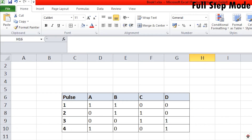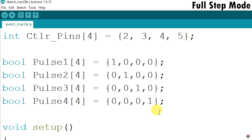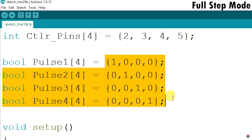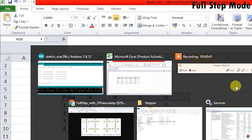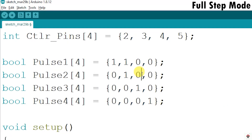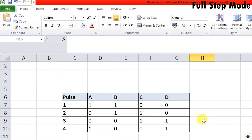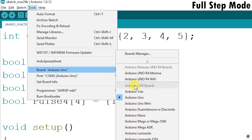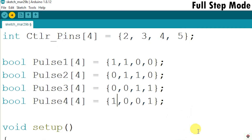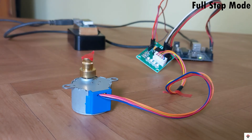Moving on to the full step mode, which is based on a different sequence table. One advantage of writing the code in array format is we only need to modify the pulse arrays. The new sequences are: pulse1 = {1,1,0,0}, pulse2 = {0,1,1,0}, pulse3 = {0,0,1,1}, pulse4 = {1,0,0,1}. After uploading, the motor runs — we can't see a major visual difference in rotation, but if you try to stop the shaft you can feel more torque.